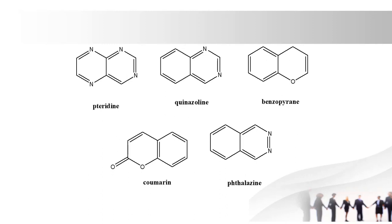Next one is benzopyran. As the name indicates, it contains benzene as well as a pyran ring. The anticoagulant drugs dicumarol and warfarin contain the benzopyran ring.